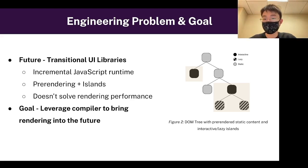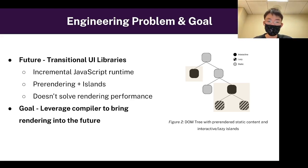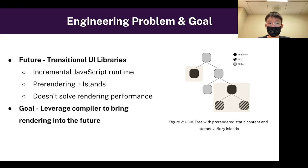To do this, optimizations include pre-rendering and islands. In Figure 2, you can see interactive and static portions of a website. For example, on Facebook, the static part could be some text, and the interactive part could be the posts people make. Pre-rendering is the process of compiling static content on the server, so the user doesn't need to compile additional static content. Islands are areas where interactivity is provided on demand.